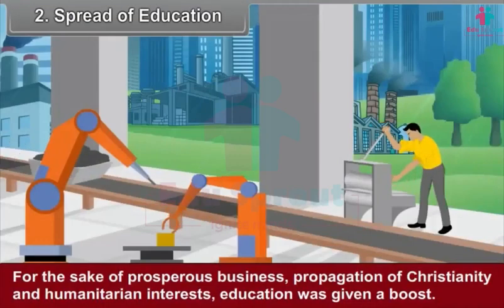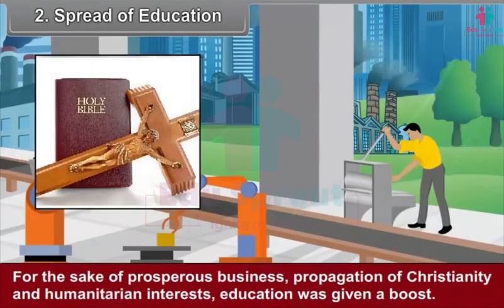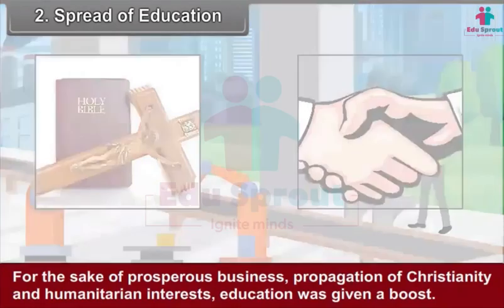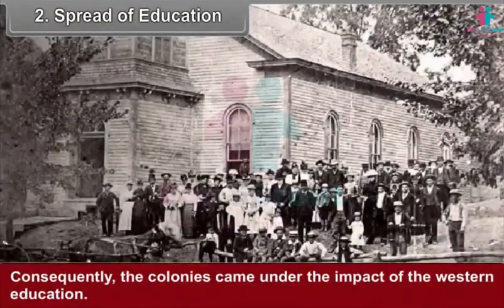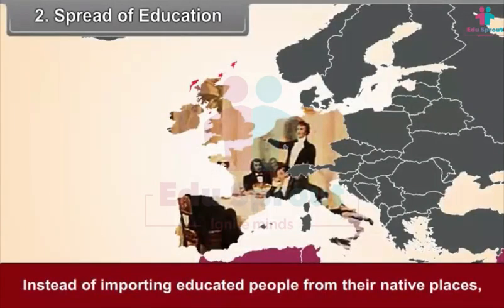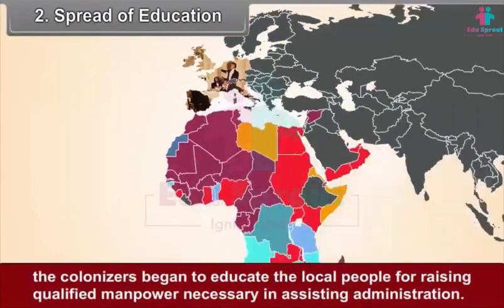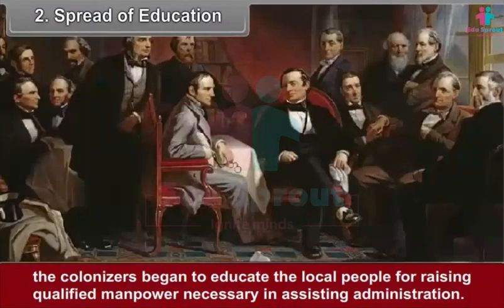Second, spread of education. For the sake of prosperous business, propagation of Christianity and humanitarian interests, education was given a boost. Consequently, the colonies came under the impact of Western education. Instead of importing educated people from the native places, the colonizers began to educate the local people for raising qualified manpower necessary in assisting administration.